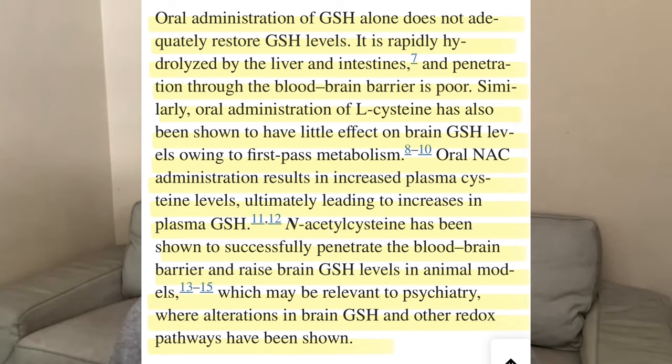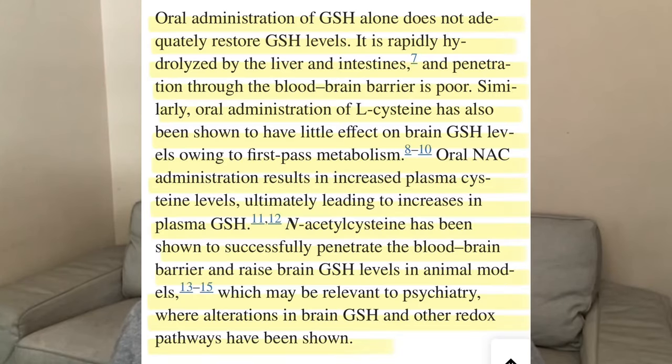Penetration of glutathione through the blood-brain barrier is very poor, so glutathione doesn't get into your brain very well. Similarly, oral administration of L-cysteine — another glutathione precursor — has also been shown to have little effect on brain glutathione levels owing to first-pass metabolism. When you take an oral supplement, it enters the bloodstream via the small intestine and first passes through the liver, which filters and destroys a lot of compounds. Unfortunately, it's also very good at removing certain nutrients, so not much gets into the bloodstream.